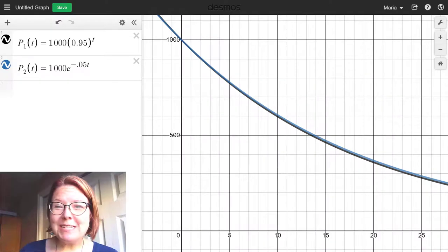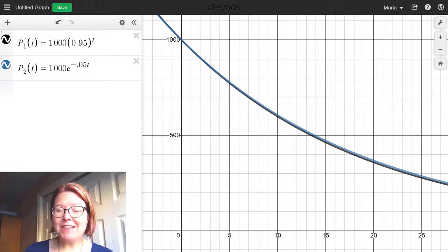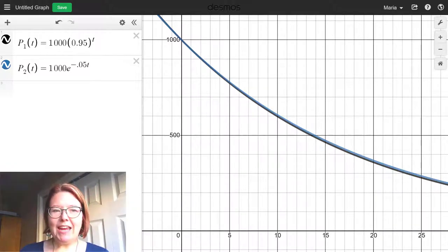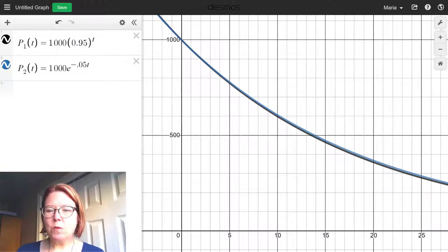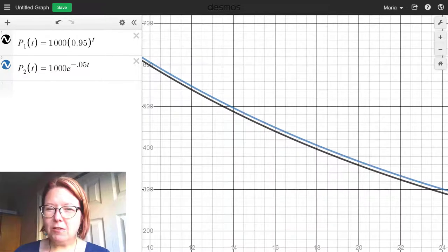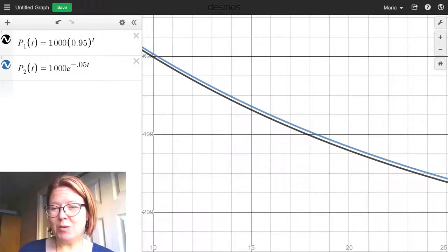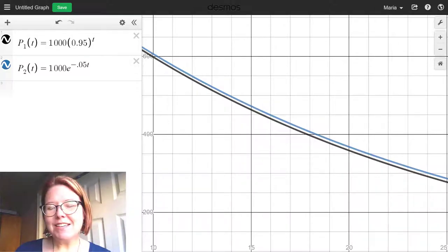I'm over in Desmos. I have the two models graphed. They both have y-intercepts at 1,000. They both are decreasing, in other words decaying models. And we can see that in this case, one of them decays just slightly faster than the other. In this case, it's the discrete model that decays a little bit faster. Or you could think of it as the continuous growth model that holds on to its value a little bit longer.